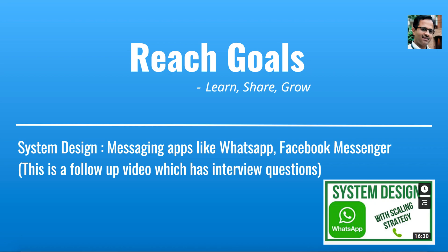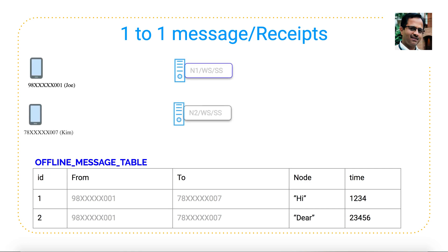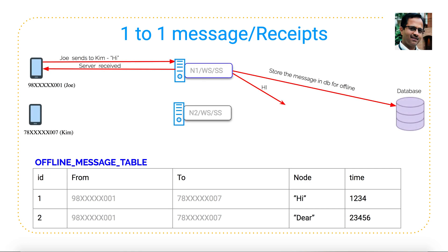Hello everyone, welcome to Reach Goals. In the previous video I talked about how to have a system design like WhatsApp or Facebook Messenger, and this is a follow-up video where I'm going to talk only about interview questions related to WhatsApp or Facebook Messenger. In the previous video I covered multiple scopes: authentication, one-on-one messaging, group messaging, multimedia messaging, database schema, and how to scale the application, as well as the architectural diagram and how to send a message from Joe to Kim.